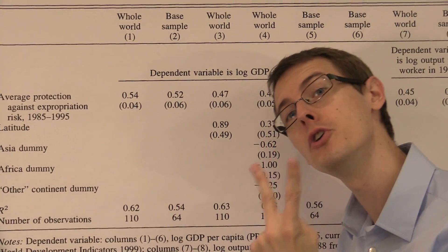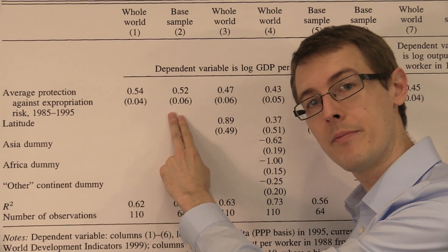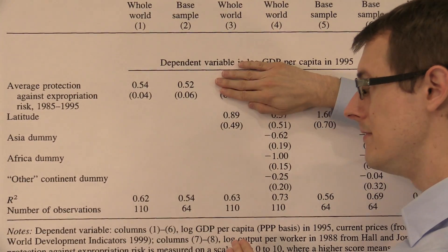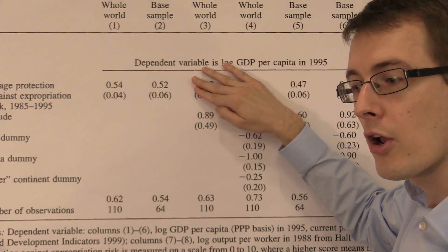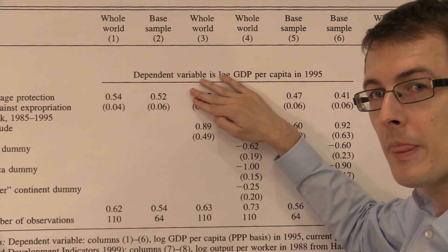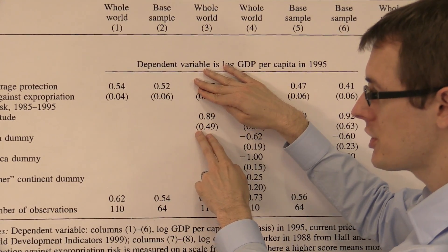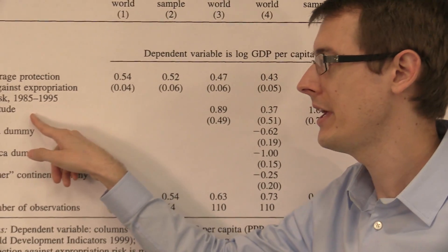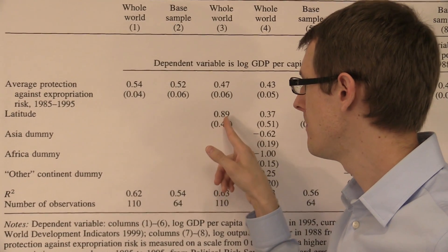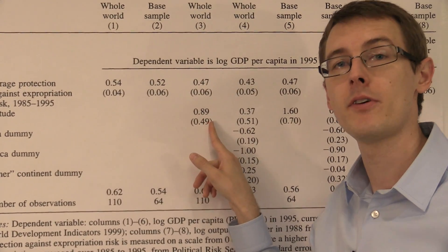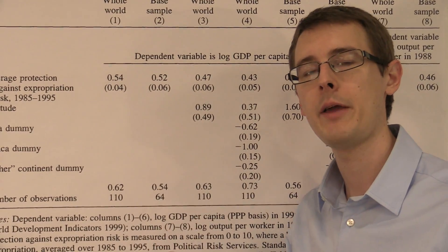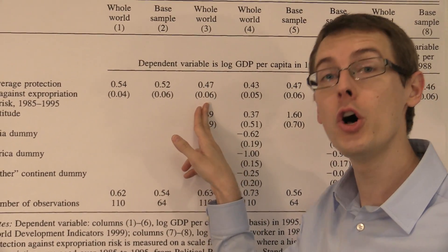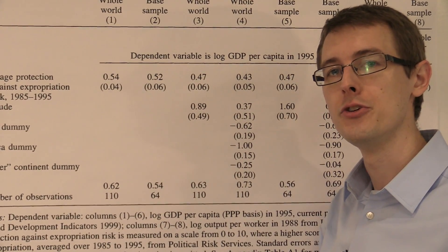We also get another number — two numbers from this, whereas before we only had one. This second number tells us that if we look at countries with roughly the same property rights, but some are close to the equator and some are farther away, there tends to be a relationship between how close you are to the equator and economic growth. If you're farther from the equator — as latitude increases — you tend to have higher economic development. So this confirms, at least in the data, one claim that Jared Diamond made about geography mattering. But the point of this paper is that property rights also matter — both tend to be positively related to economic development.